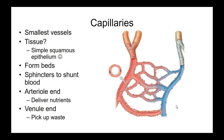Here we have the arterial end, where we have the higher oxygenated blood, and then the venous or venule end over here. What substances is blood bringing toward tissues? Oxygen, absolutely, and other nutrients like glucose. What's being taken away from tissues? Waste products — think about metabolism. Carbon dioxide is a big one, and other waste metabolites will be taken up. The delivery end is the arterial side, and the waste pickup is on the venous side.